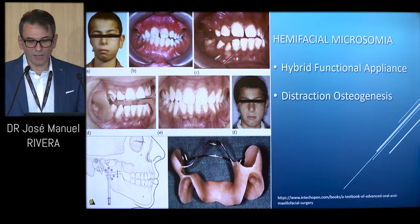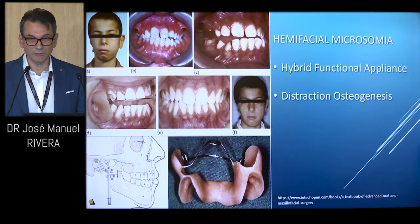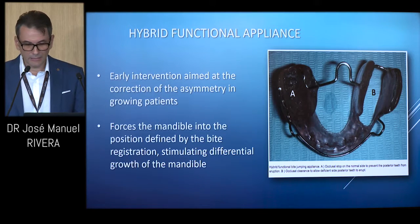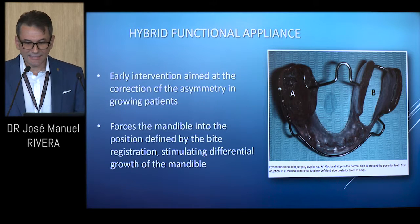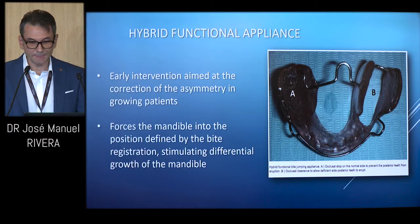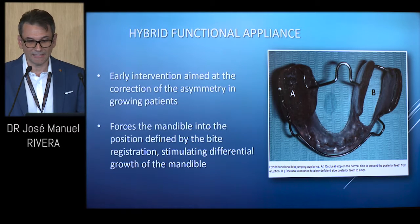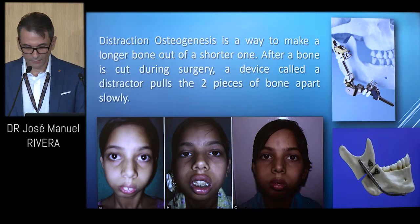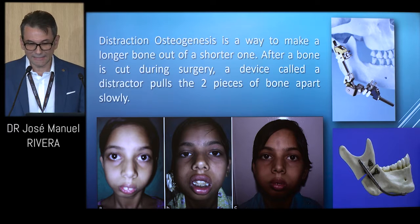Skeletal facial asymmetry due to a congenital problem can be treated with a hybrid functional appliance to modify growth. Early diagnosis is fundamental in order to intercept and correct abnormal growth, avoiding the development of skeletal asymmetry. Skeletal jaw asymmetries can be treated by surgical therapy only at the end of growth. In case of slight asymmetry, early intervention aimed at correction is recommended. For more severe cases of skeletal asymmetry in the growing child, distraction osteogenesis is recommended.